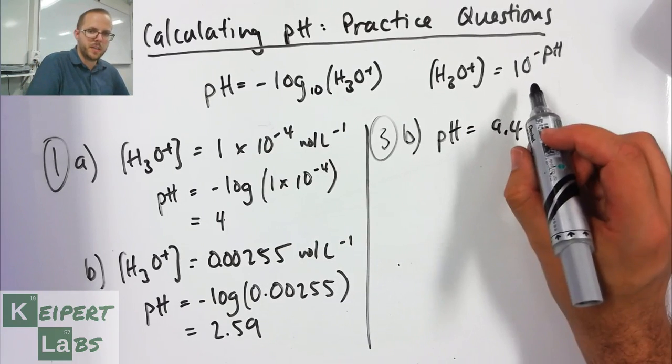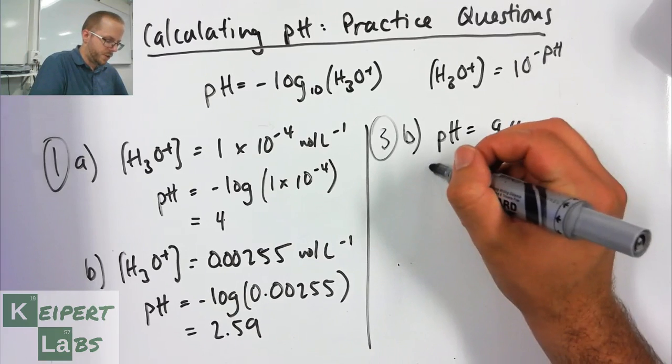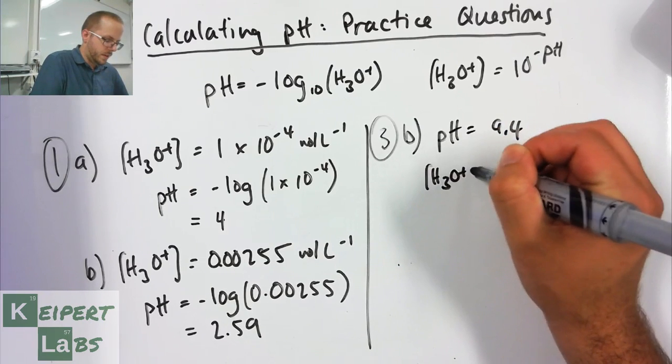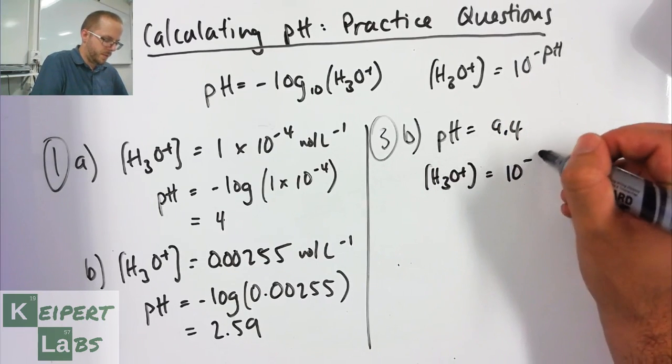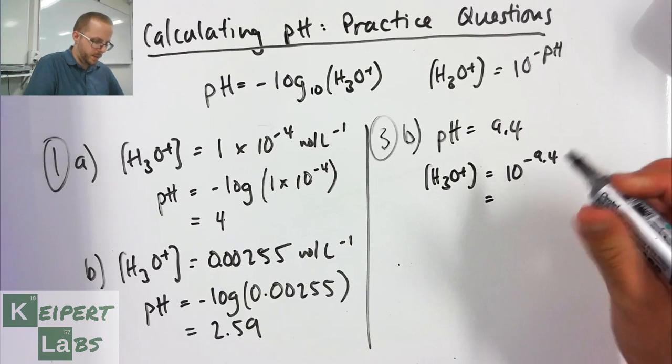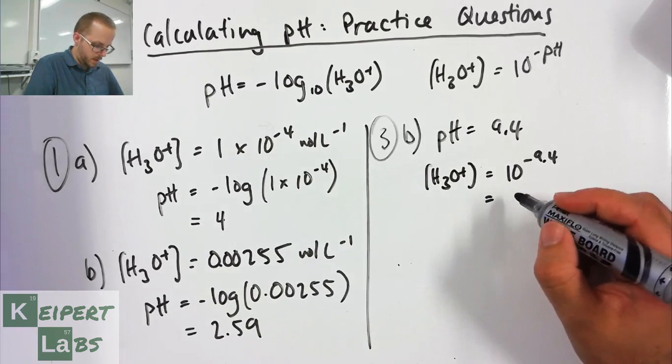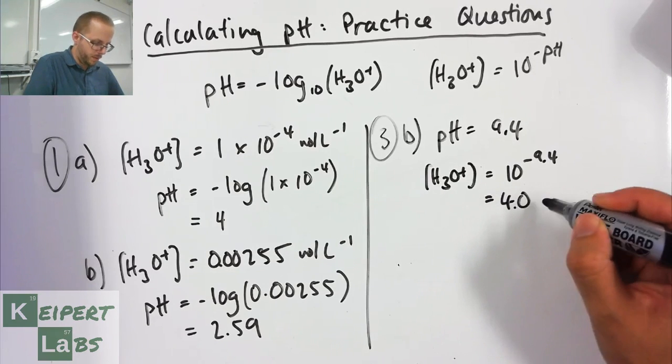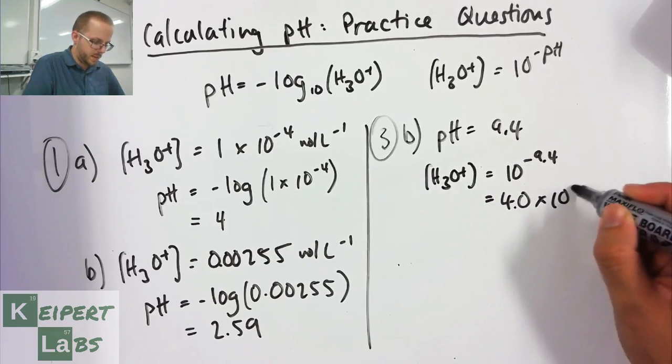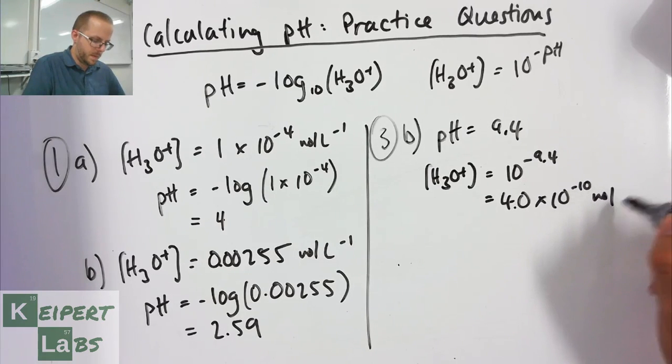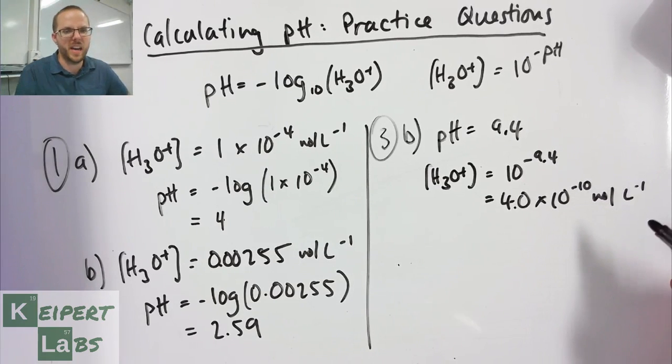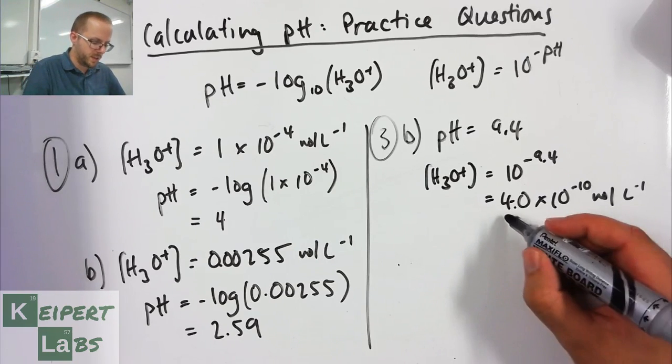We're substituting into this formula here. Our hydronium ion concentration equals 10 to the minus 9.4. And so we get a value of, I'm going to say 4.0 to round it off times 10 to the minus 10 moles per liter, because it's 3.98 something times 10 to the minus 10. So this is to two significant figures when I round that off.